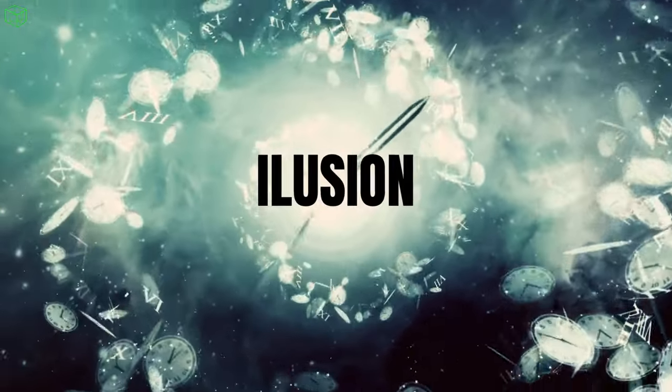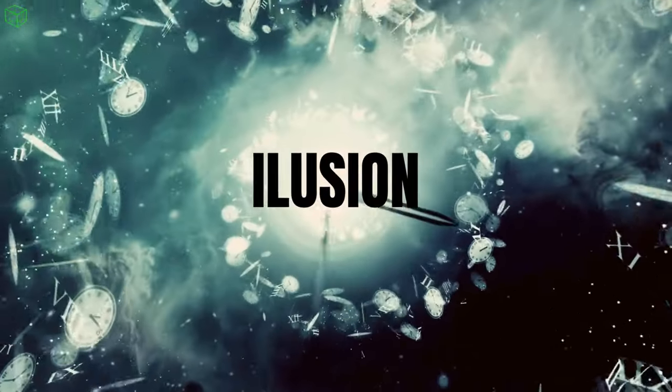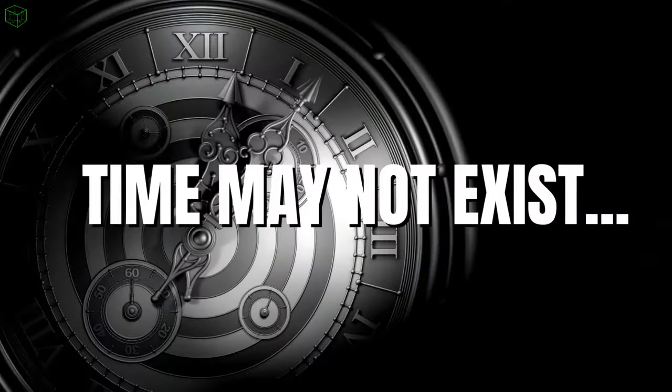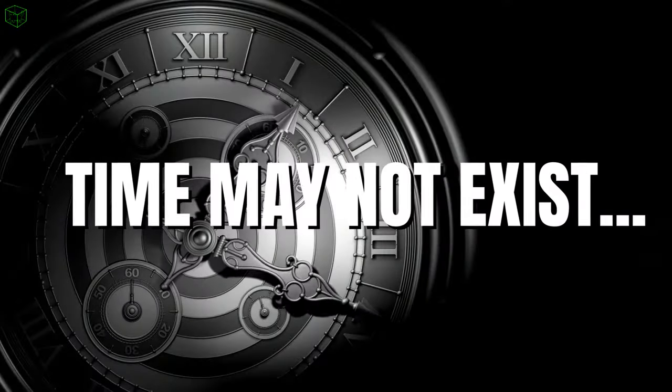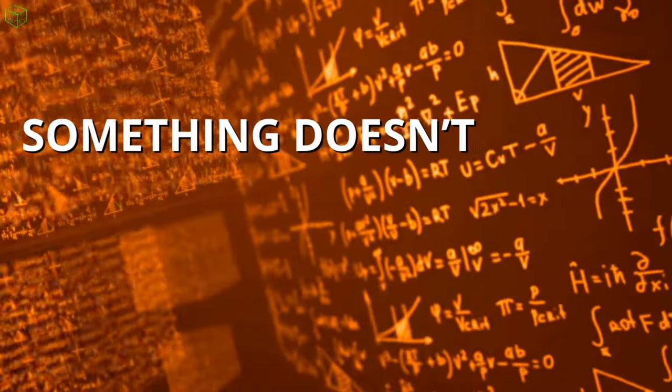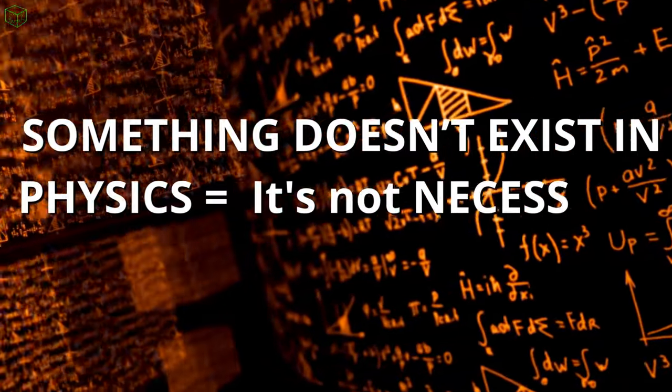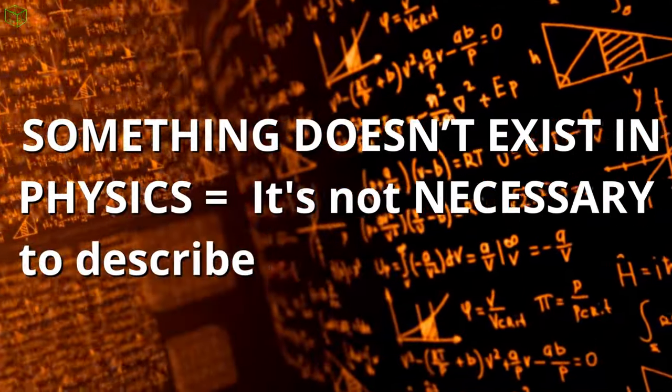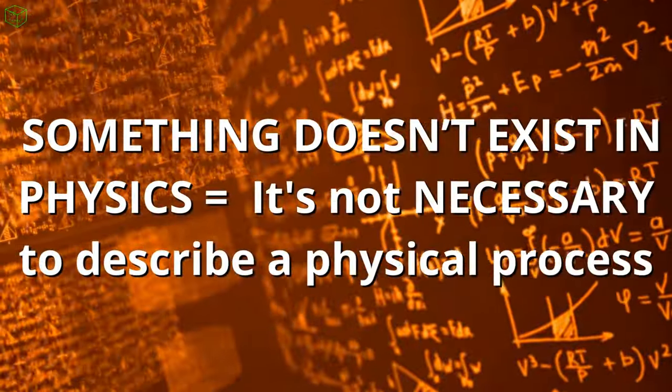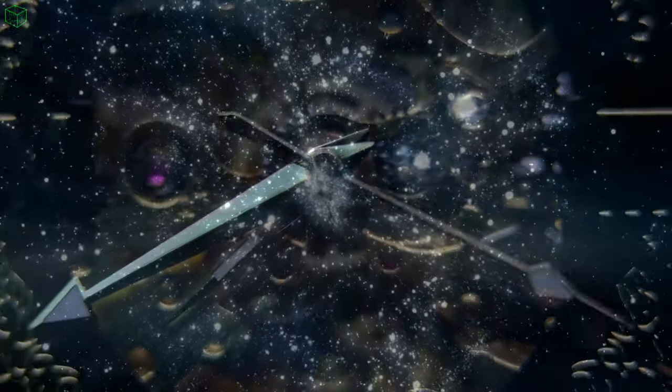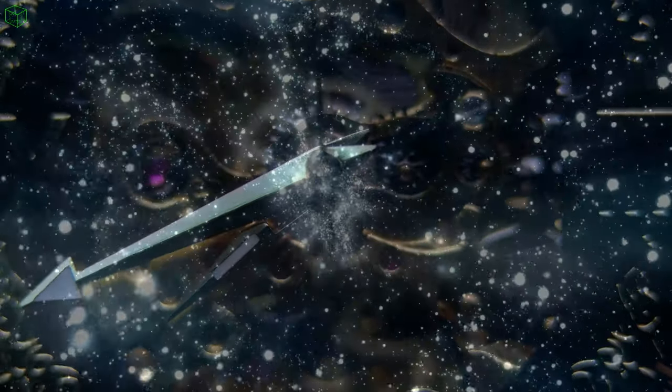For this reason, some physicists argue that time may be just an illusion and not something essential in the universe. Some even claim that time may not exist, but the question of existence can make things somewhat ambiguous. When we say that something doesn't exist in physics, we don't mean that it's not real, but rather that it's not necessary to describe a physical process. In this sense, time wouldn't be something indispensable to describe the universe, just an illusion we have of something more fundamental.